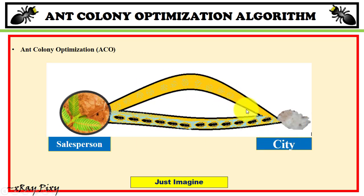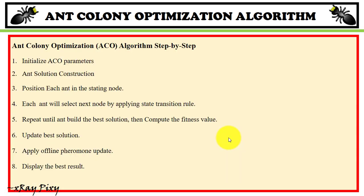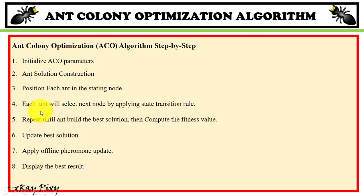Now, the Ant Colony Optimization algorithm step by step: Step 1 is parameter initialization. Step 2 is constructing the solution for each ant, positioning ants, and selecting the next node using the state transition rule. This repeats until finding the ant with the best solution. Then we compute the fitness value, update the best solution, apply offline pheromone updates, and display the best solution.